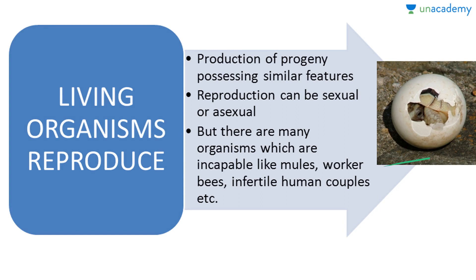Next, living organisms reproduce. Reproduction is the production of progeny possessing similar features. It can be through sexual or asexual means. However, organisms like the mule, infertile worker bees, or infertile human couples are still living, so reproduction too cannot be called a defining property.